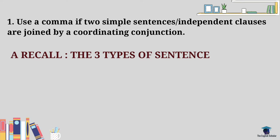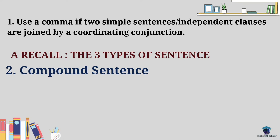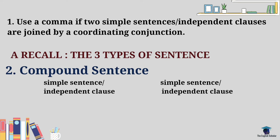Second in the list is the compound sentence. The compound sentence consists of two independent clauses, and these two independent clauses are usually combined using a comma and any of the seven coordinating conjunctions: for, and, nor, but, or, yet, so — abbreviated as FANBOYS.